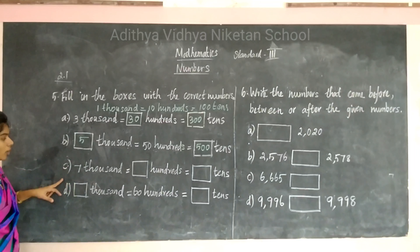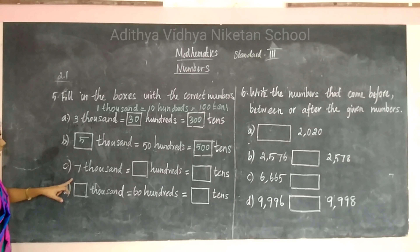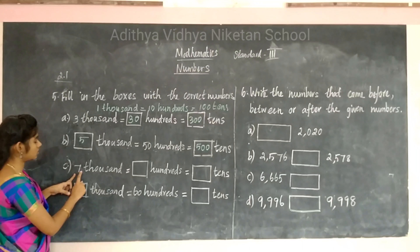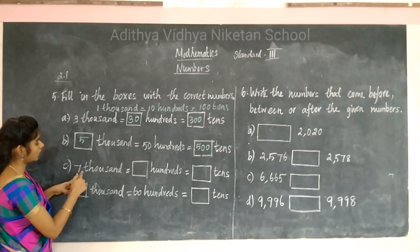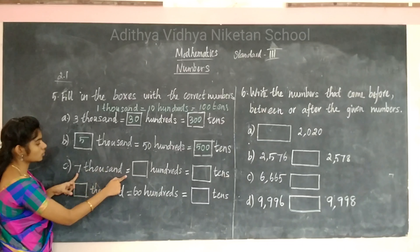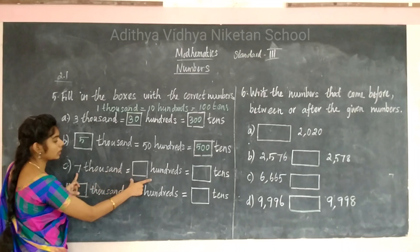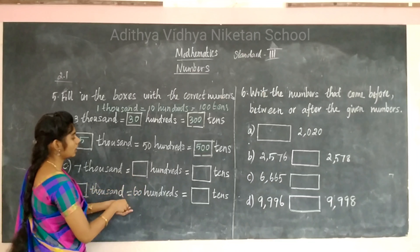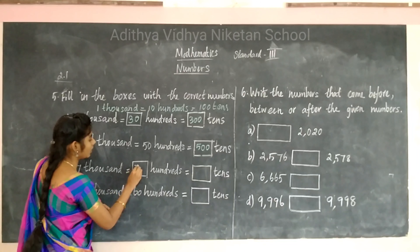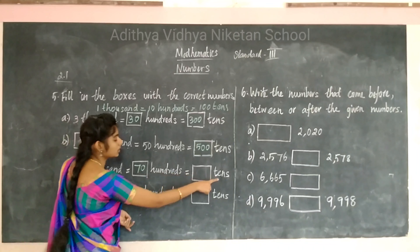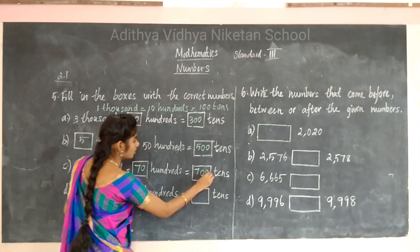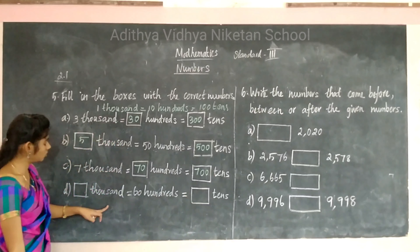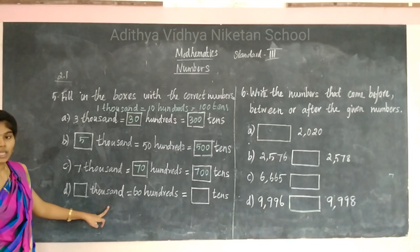The next two problems you will do on your own. I'll do the C-section problem: 7000 has 70 hundreds and 700 tens. You will do the C-section as an assignment.